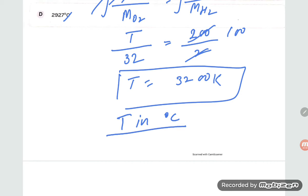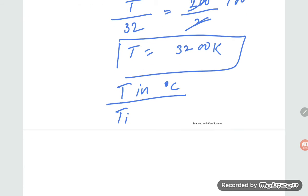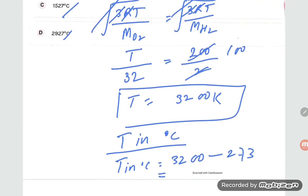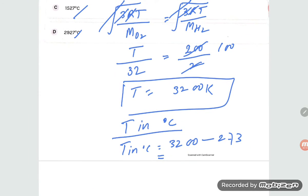So what is T in degree Celsius? 3200 minus 273, 3200 minus 273. If you are calculating, it is coming 2927 degrees Celsius.